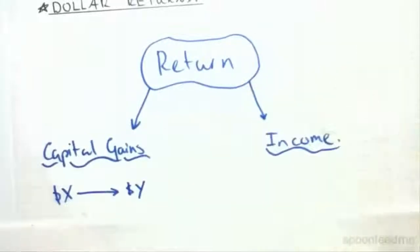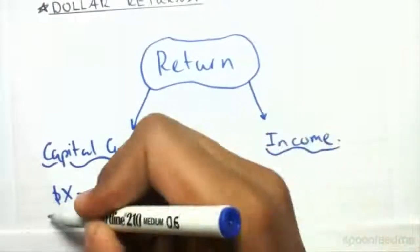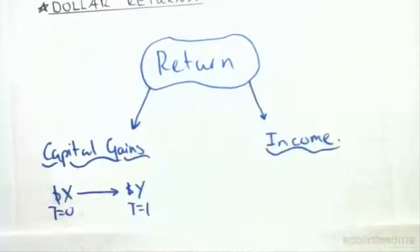If you were to sell that house at time one—we'll call this time zero which represents today—and we were to sell this house in time one when there was an increase in the value of the house, then that difference you make is what is known as a capital gain.